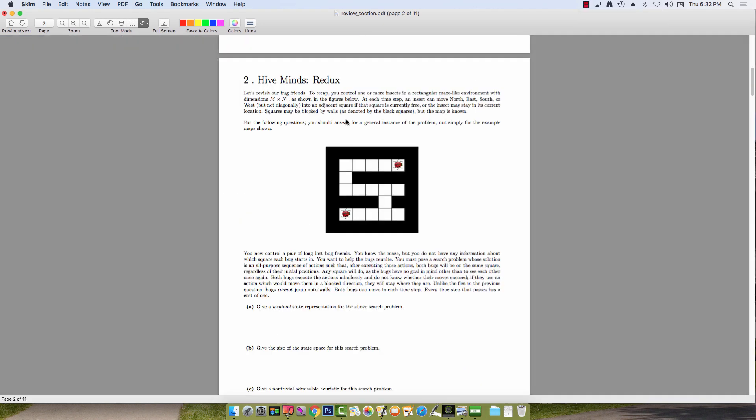And this problem will be coming up with a minimal state space representation for a given search problem. So the search problem is that we have this N by N grid world with different walls. We have two bugs that can move around in this world at each step. And the goal is for these two bugs to meet in the same square. Unfortunately, we don't know the initial positions of these bugs. And so what we have to do is we have to encode that uncertainty into the actual algorithm. So to do that, we can say that for each space, we can know that either a bug could be in that space or a bug definitely cannot be in that space.